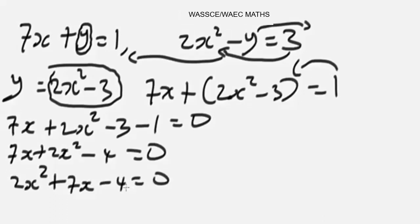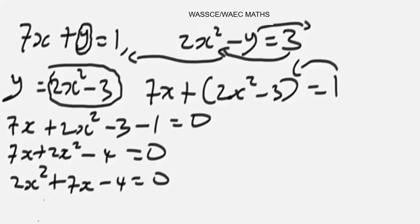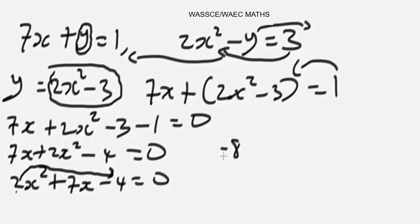Now we have a quadratic expression. We need to find the roots — these will be our x values, and from them we can find our y values. We need to factorize this. When the coefficient of x² is more than one, we multiply the coefficient 2 by the constant -4, giving us -8. We need two numbers that multiply to give -8 and add to give +7.